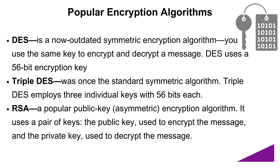Let's go through some encryption algorithms. Data Encryption Standard, or DES, is a now somewhat outdated symmetric encryption algorithm that uses the same key to encrypt and decrypt a message. It uses a 56-bit encryption key and encrypts data in blocks of 64 bits — these sizes are typically not large enough for today's users. Triple DES was once the standard symmetric algorithm; it employs three individual keys of 56 bits each, so the total key length adds up to 168 bits, though according to most experts its effective key strength is only 112 bits. Then we have RSA, a popular public key encryption algorithm that uses a pair of keys: a public key used to encrypt the message and a private key used to decrypt it.